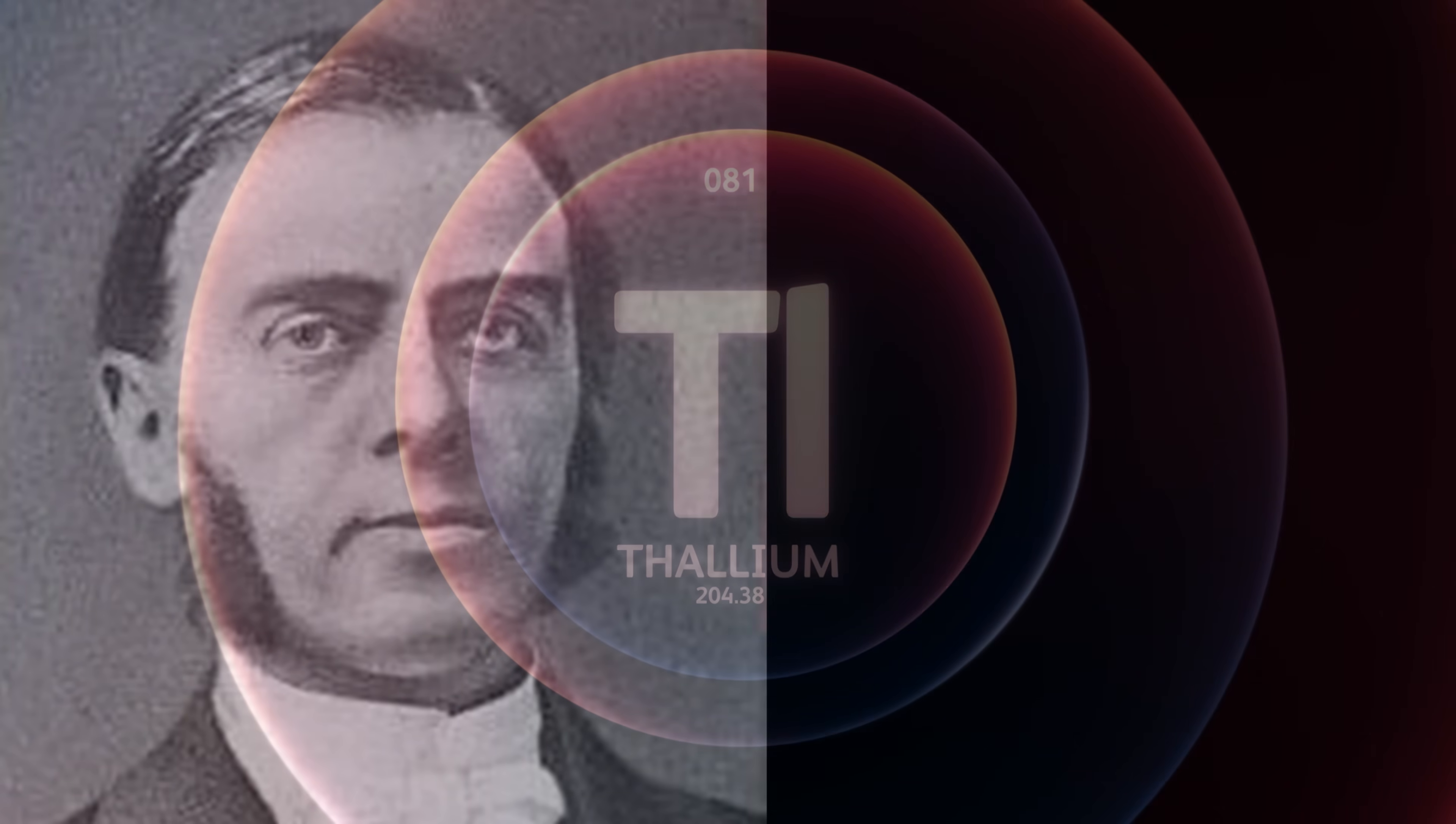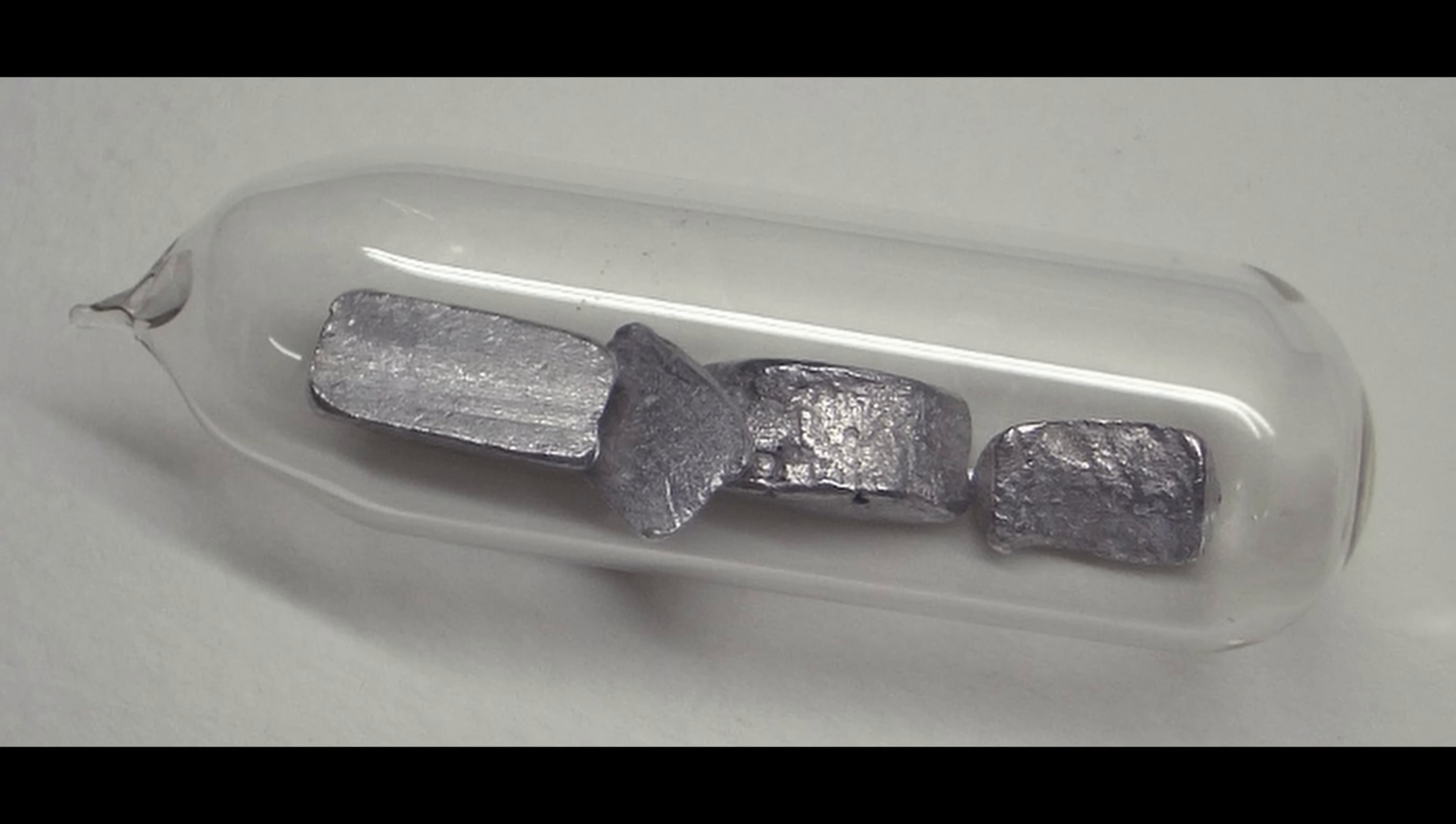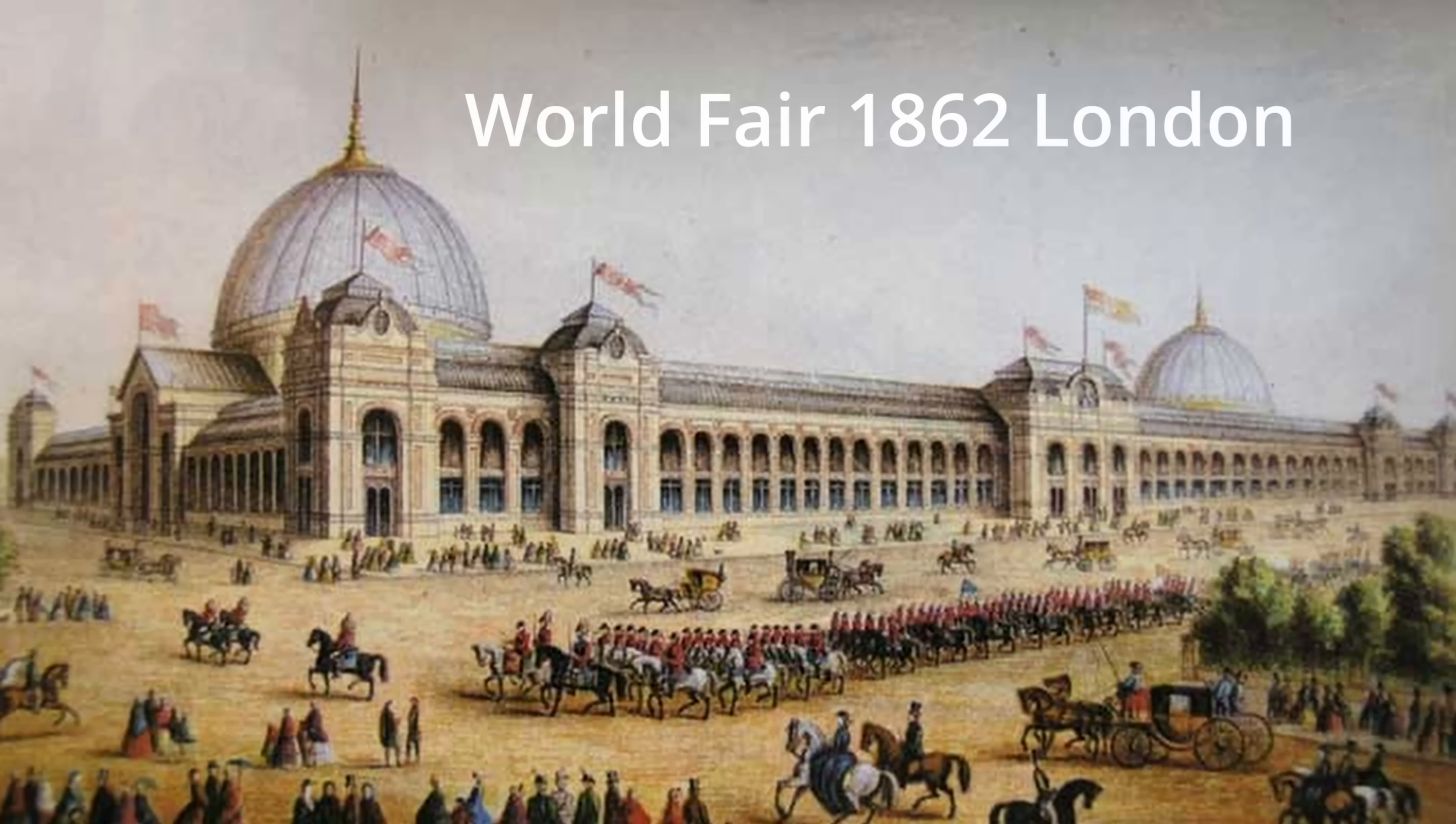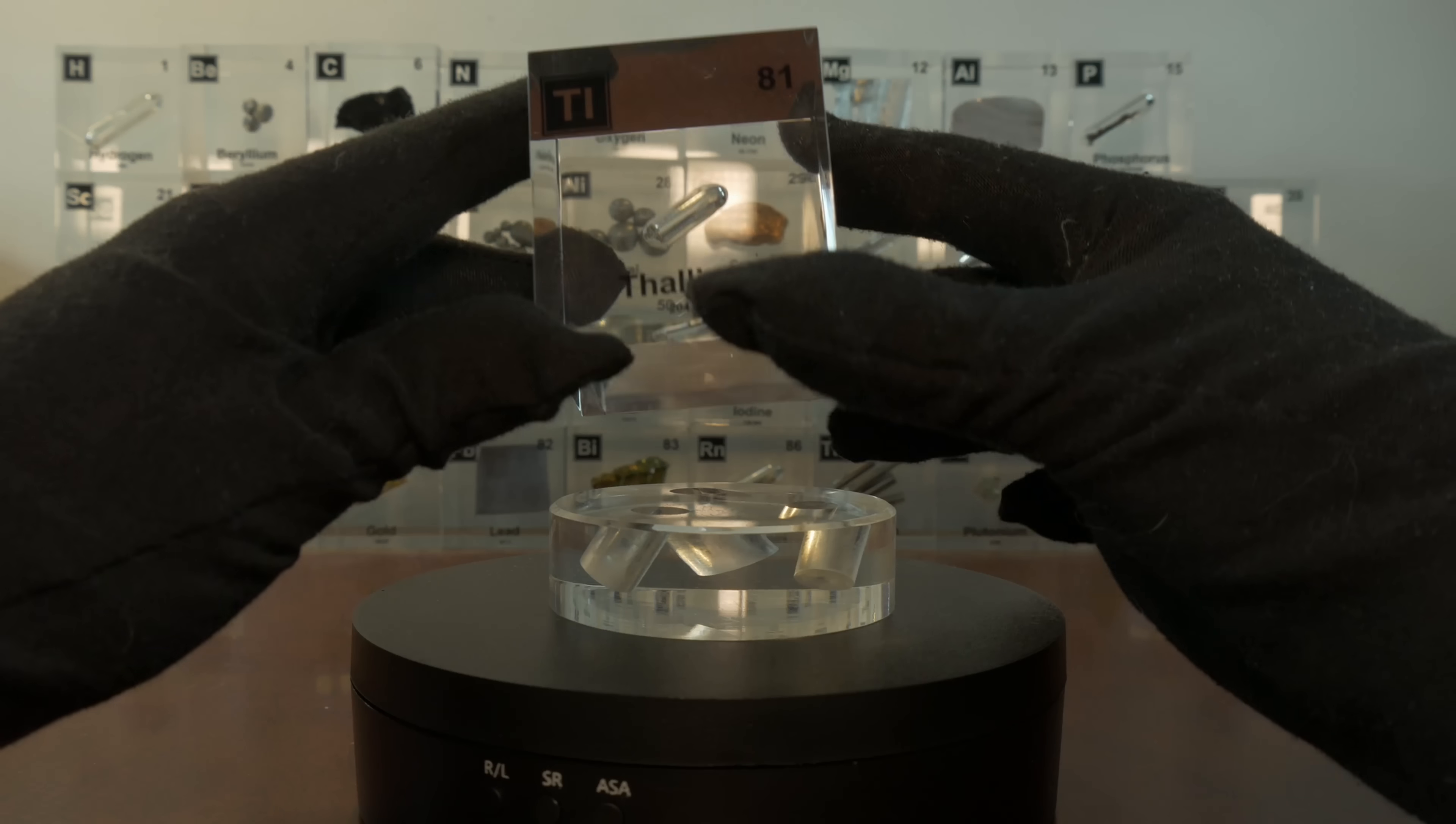Now, around the same time, a French chemist named Claude-Auguste Lamy was also isolating this new element independently. Scientific discoveries can sometimes happen in parallel. By 1862, both Crookes and Lamy had managed to extract pure thallium metal. Crookes even showed off a pile of thallium powder at the World Fair in London.